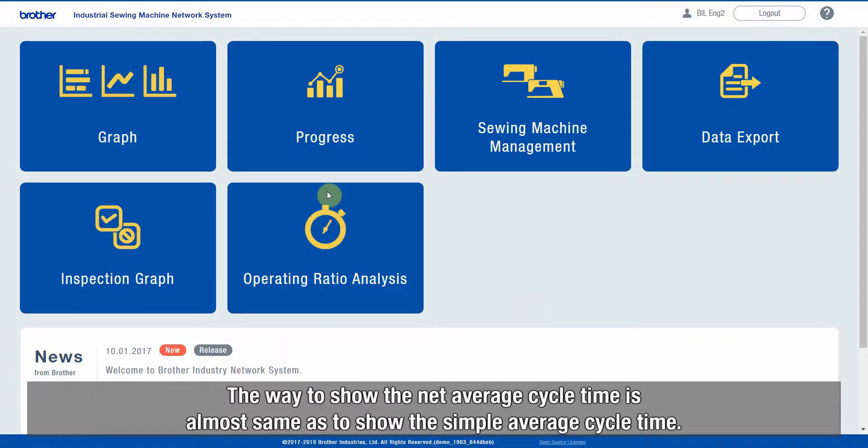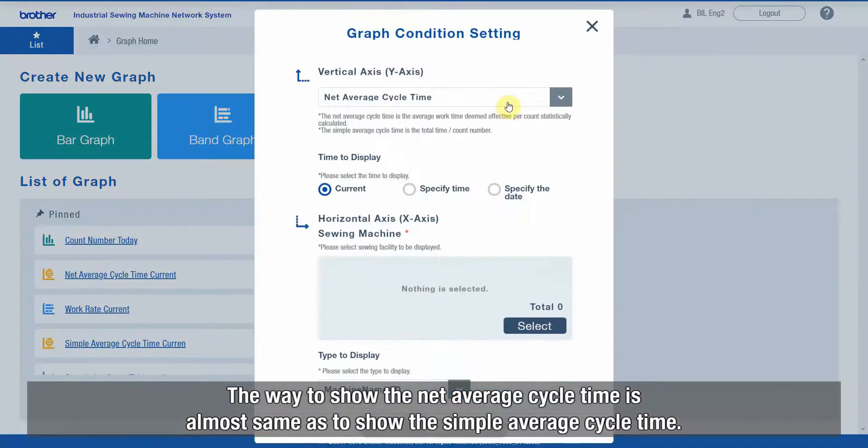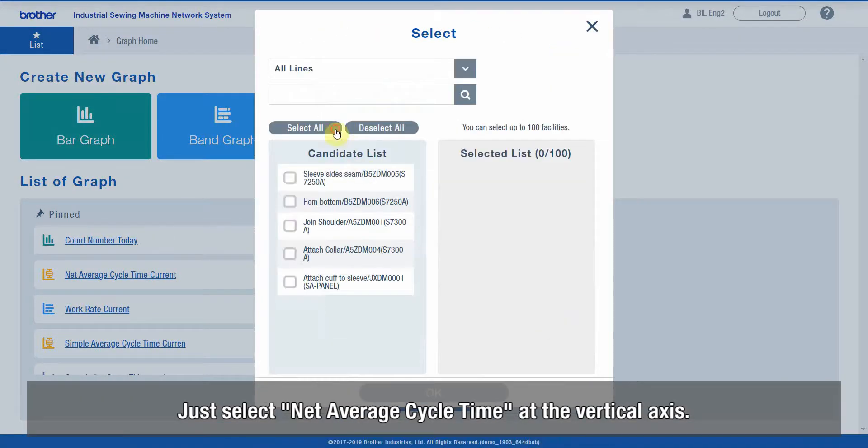The way to show the Net Average Cycle Time is almost same as to show the Simple Average Cycle Time. Just select Net Average Cycle Time at the vertical axis.